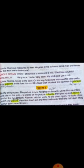Scene 2 — second scene of this play. In the living room, the picture is now hanging on the wall. Uncle Shams enters and sits on the sofa. He stares at the picture critically — critically means tanqeedi tor par. Then he gets up and adjusts it so that it is not straight. Pleased with his work, he sits down again, looks at his watch, yawns, then lies down.